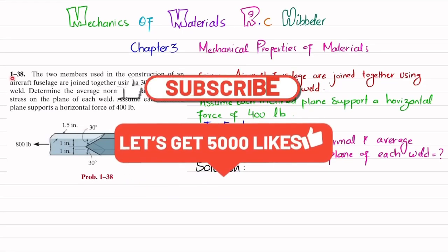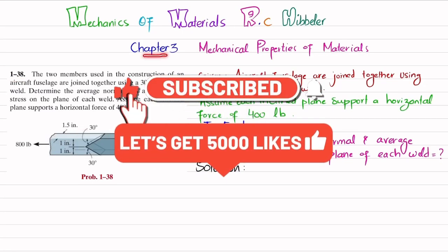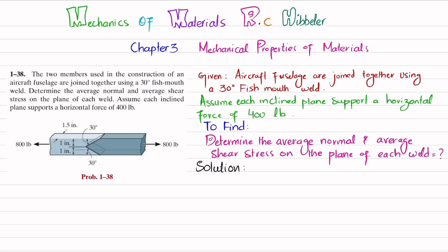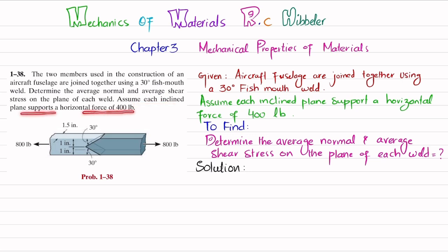Welcome back, problem 1-38. This problem is taken from Chapter 3, Mechanical Properties of Material, from the book Mechanics of Material by R.C. Hibbeler. The statement of the problem is: the two members used in construction of an aircraft fuselage are joined together using a 30-degree fish mouth weld. Determine the average normal and average shear stress on the plane of each weld, assuming each inclined plane supports a horizontal force of 800 pounds.